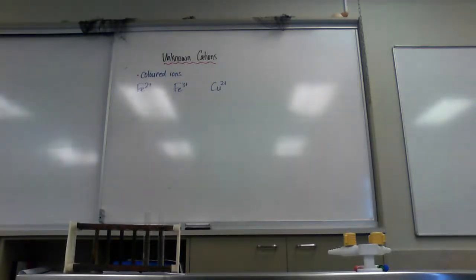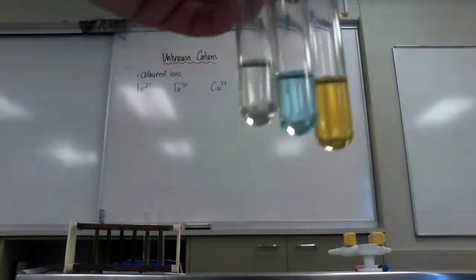The first of a few videos looking at how we identify unknown cations. We're going to use a flowchart found in Begillian Chemistry by Wignol and Wales as our primary basis. It's got a lovely flowchart that helps us with working out these. The first one I'm going to do today doesn't actually really require the flowchart because some cations are actually colored, and here I've got three examples of those.